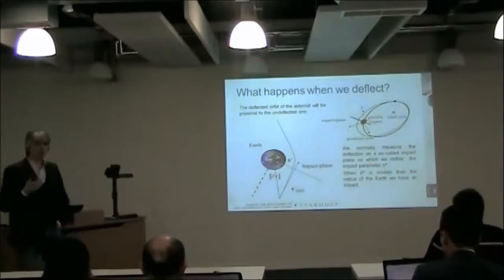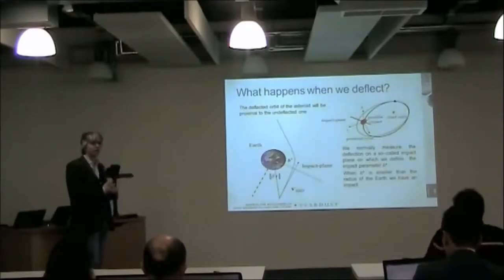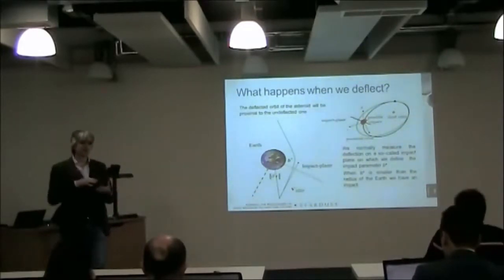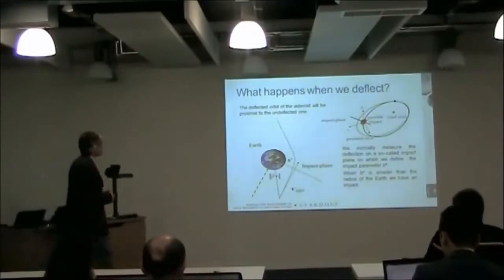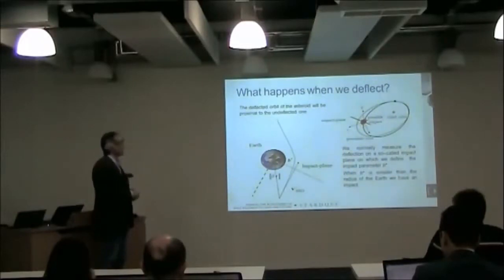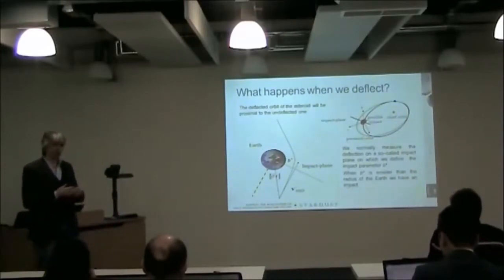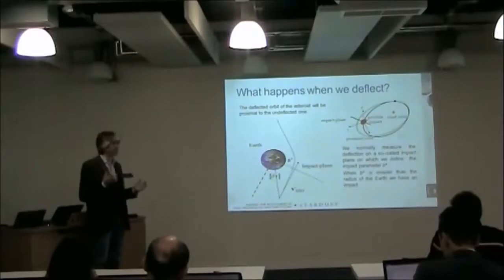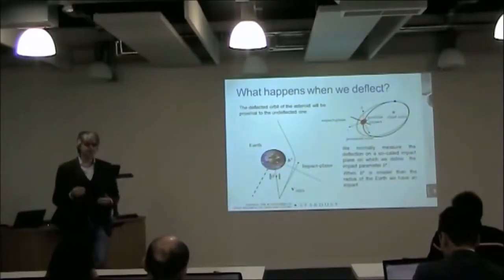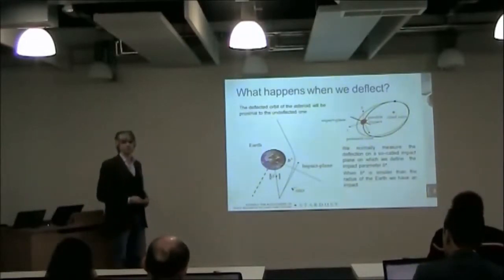One important effect is to delay or speed up the motion of the asteroid, to reach the Earth at a later or earlier time. The first thing we can observe is that when we deflect an asteroid, as Professor Conway said, we actually change the velocity of the asteroid by millimeters per second, maybe centimeters per second if we are really, really good. So the orbit of the asteroid after the deflection is very, very close to the original orbit.